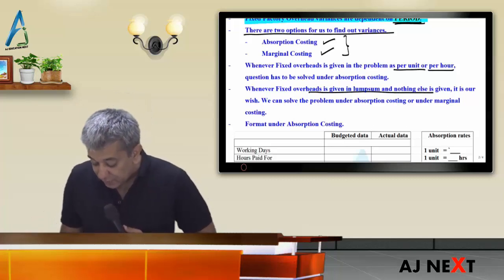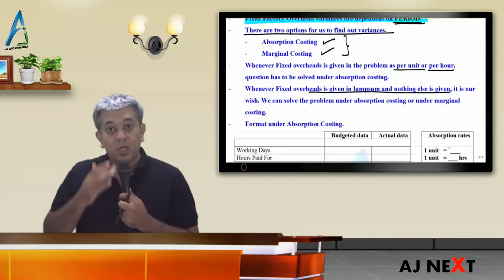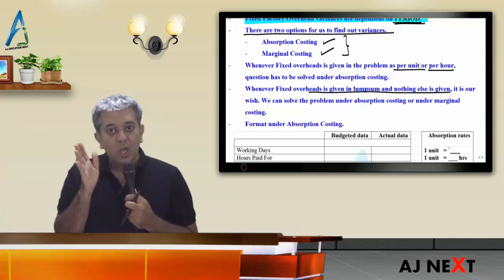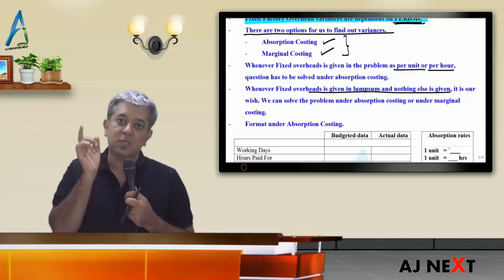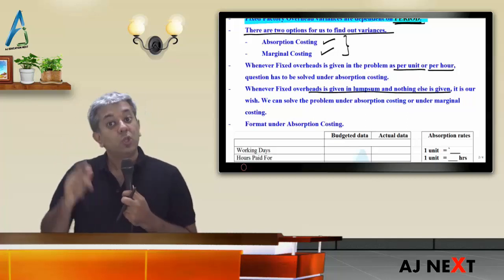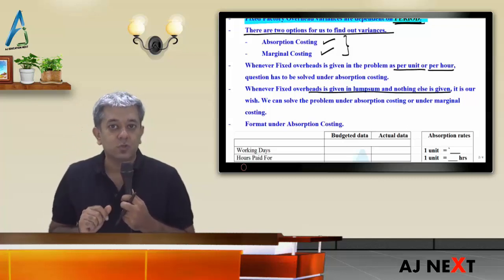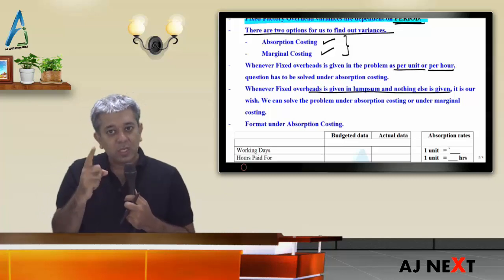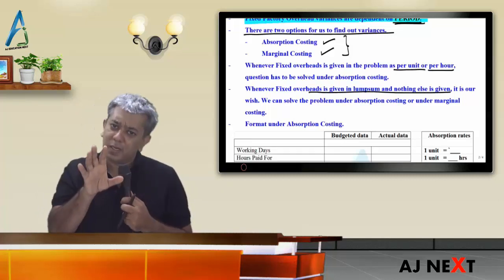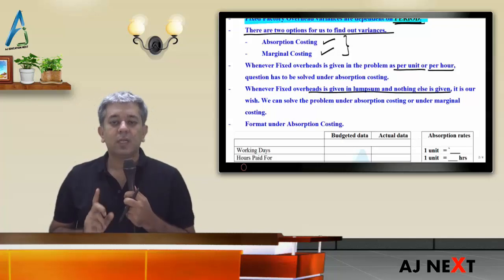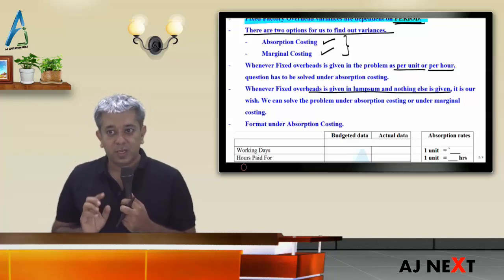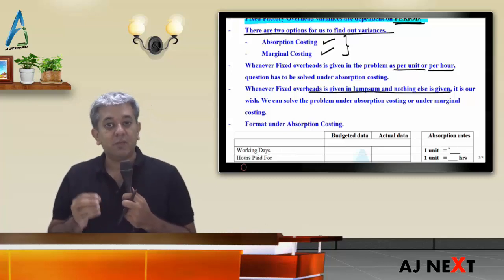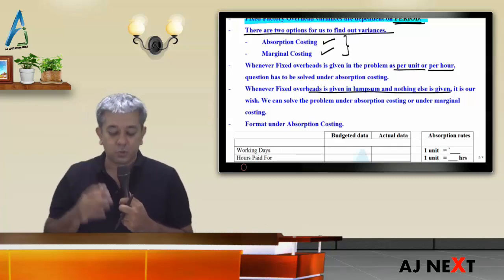If such clear words don't appear, here's a small rule: if fixed overheads per unit or per hour are given anywhere in the sum, then that sum compulsorily has to be solved based on absorption costing — nothing else. However, if fixed overheads are given as a lump sum and nothing else is specified, then it's your choice — you can solve under absorption costing or marginal costing. Given a choice, marginal costing will be easier because only one variance comes.